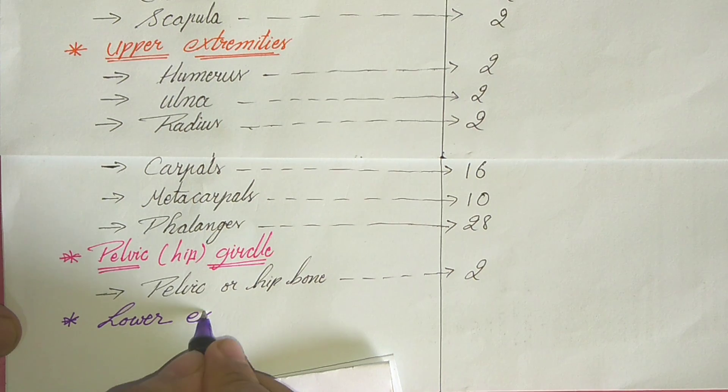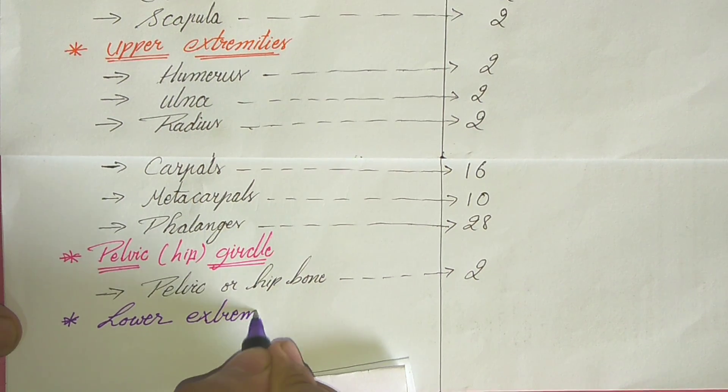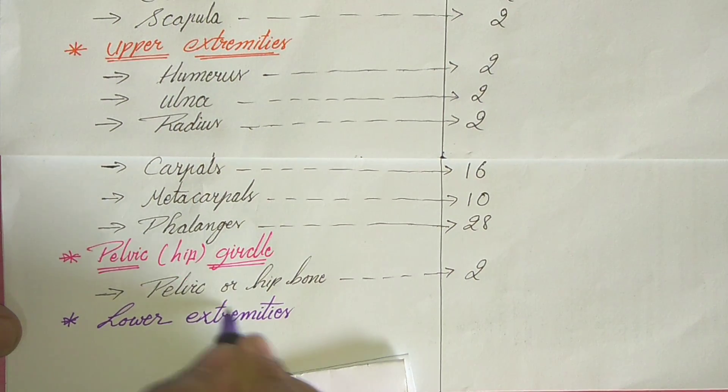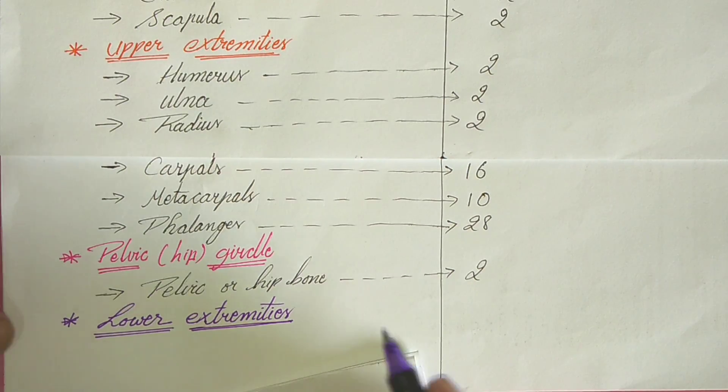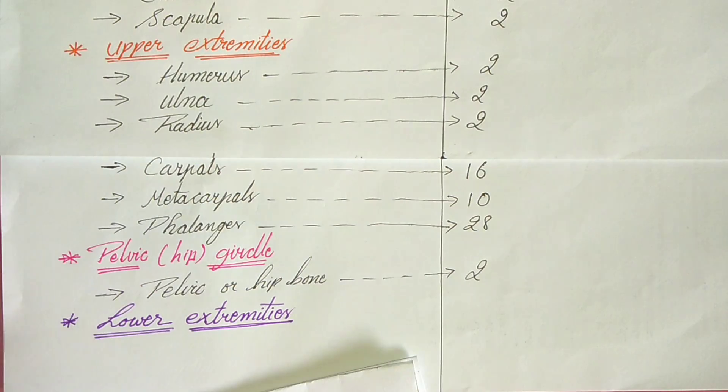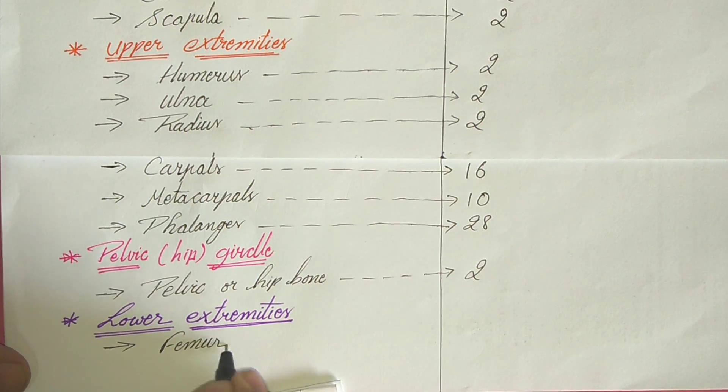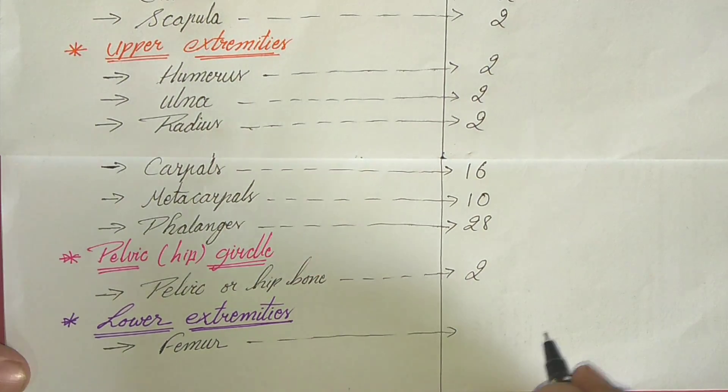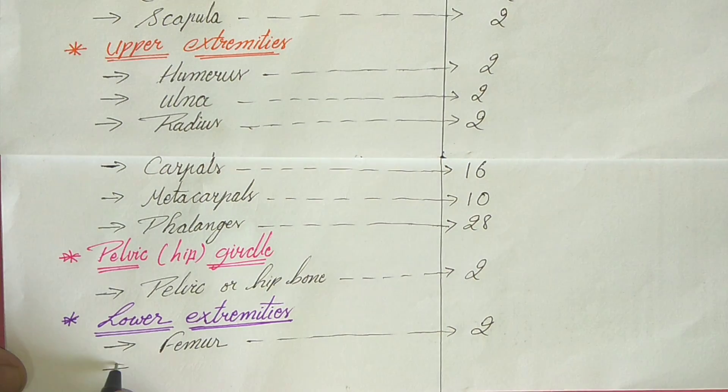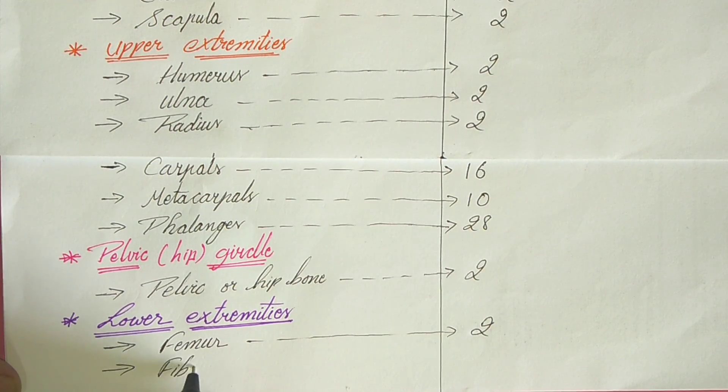Now come to the lower extremities. In lower extremities, femur bone is present, which is two in number, one bone on each side.